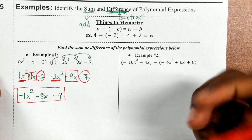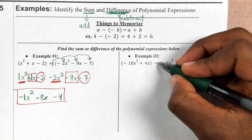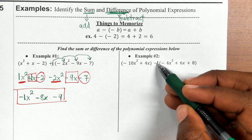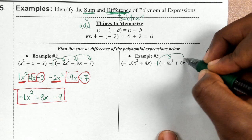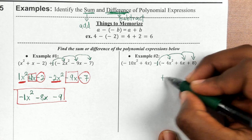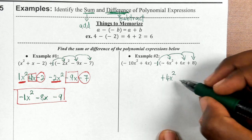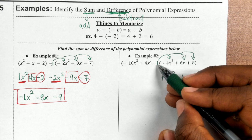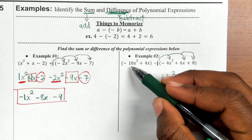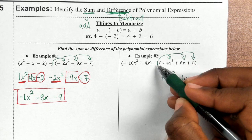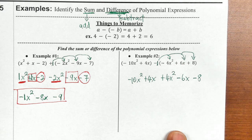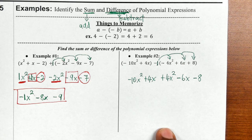For the next problem, in front of the second polynomial is a negative 1. When you're subtracting, you can't just remove the parentheses — you have to distribute that negative 1. Negative 1 times negative 4x squared is positive 4x squared; negative 1 times positive 6x is negative 6x; negative 1 times positive 8 is negative 8. Everything in front — negative 10x squared and positive 4x — you bring down.